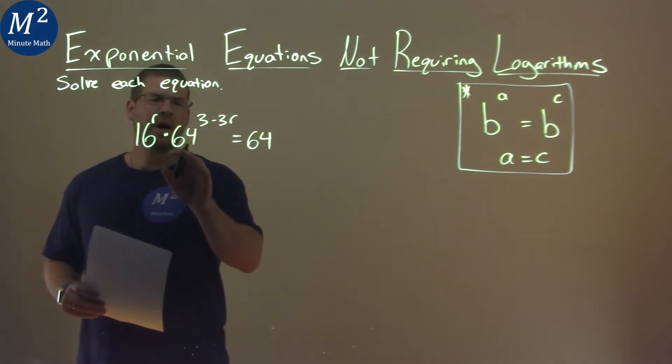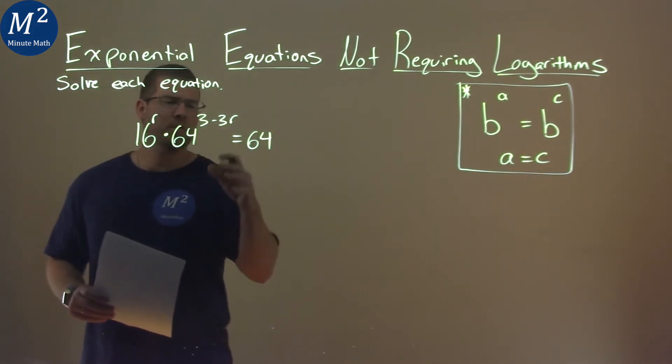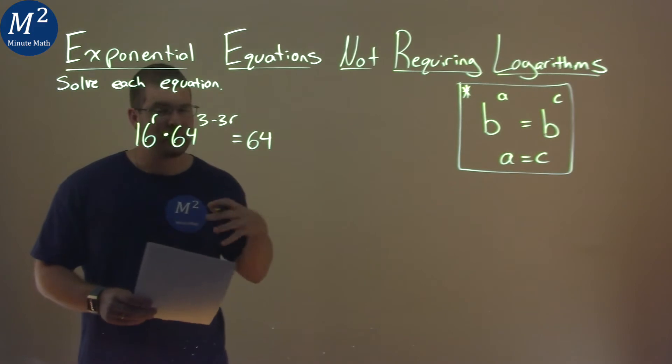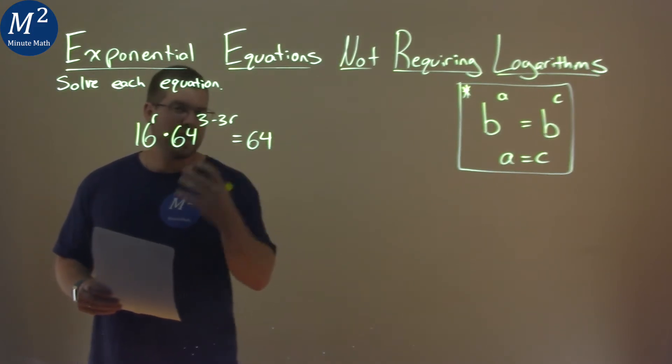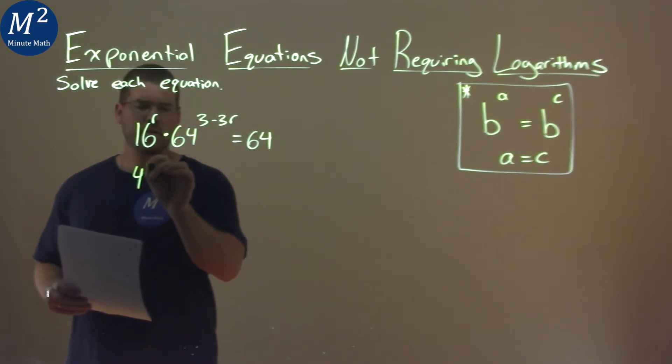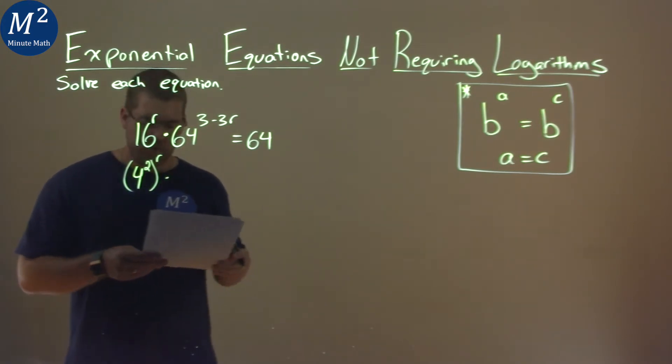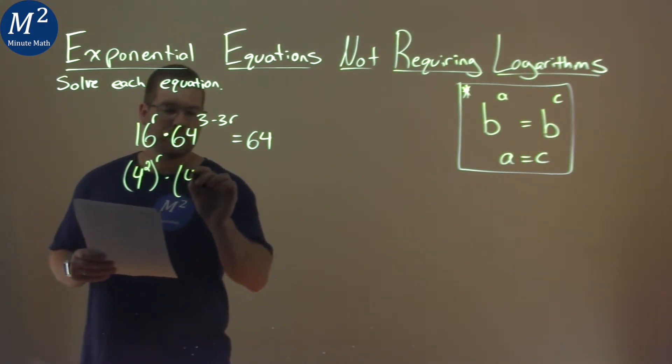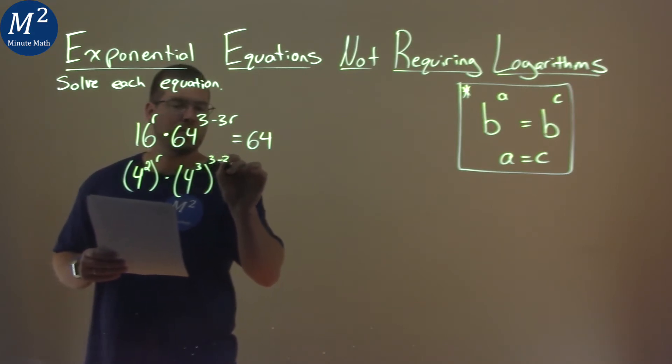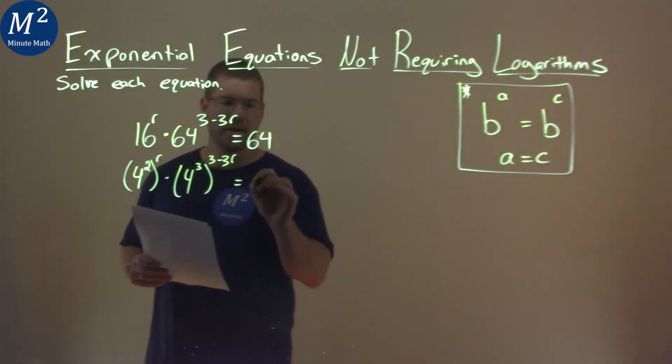Now, one thing I want to do is find each one of these, 16 and 64, something I'll write with the same base raised to an exponent. That's going to be 4. 4 squared is 16, but we still raise it to an r power. 4 to the 3rd power is 64, and we still have to raise that to the 3 minus 3r power. And again, 64 is 4 to the 3rd power.